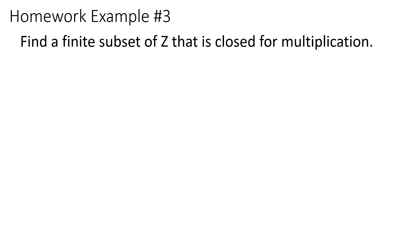The final example is: find a finite subset of Z (the integers) that is closed for multiplication. Finite means you can count it — there's a countable number of elements. A subset means we're selecting from within the integers. Closed for multiplication means that when you multiply elements within the subset, the result must also be in the subset.